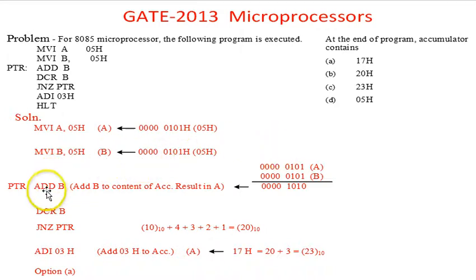The third instruction ADD B means you have to add the content of A and content of B, and the result is to be put into the accumulator. Next instruction is DCR B - B is to be decremented.